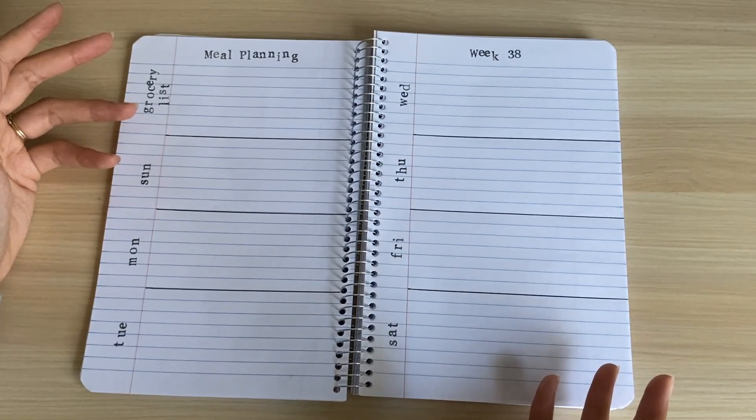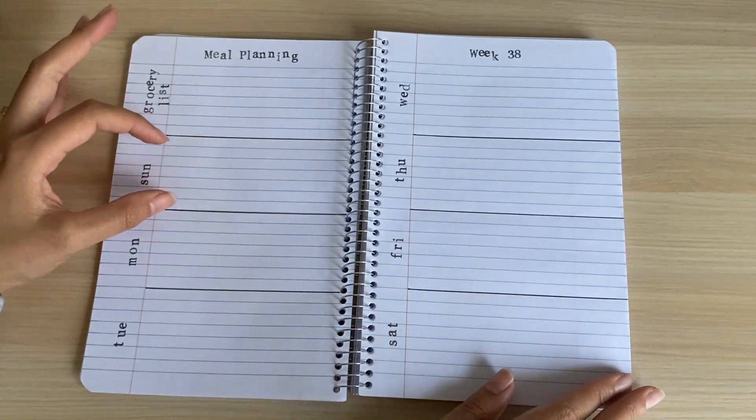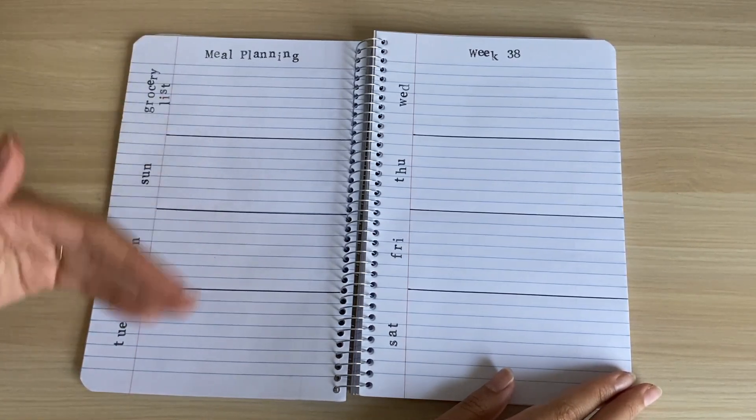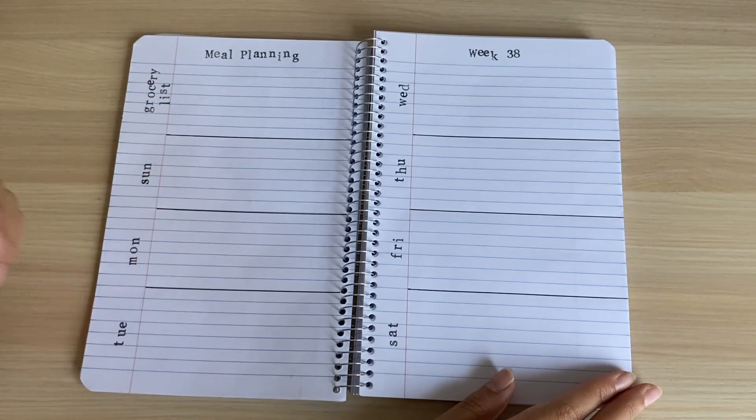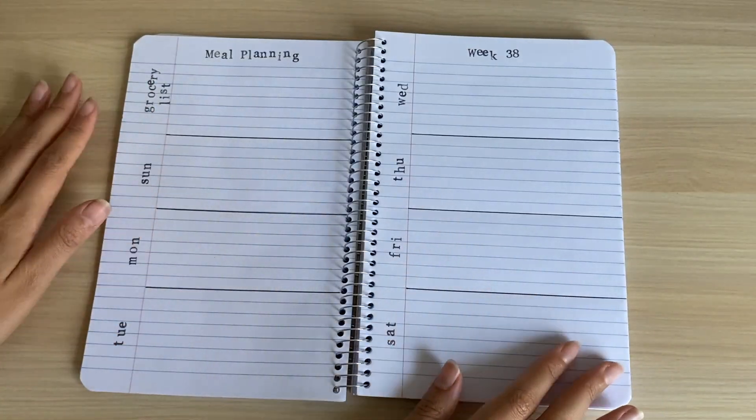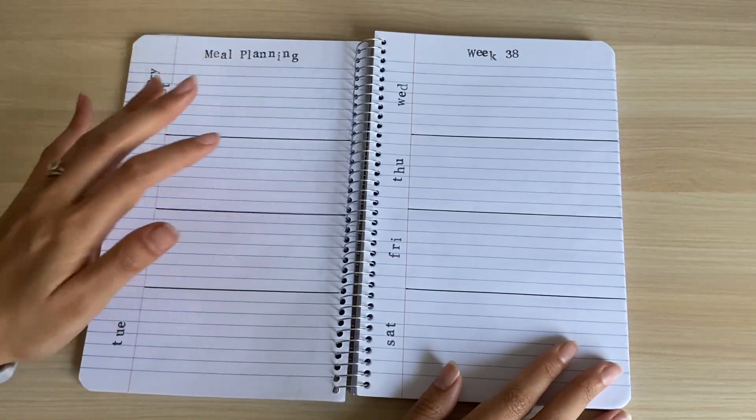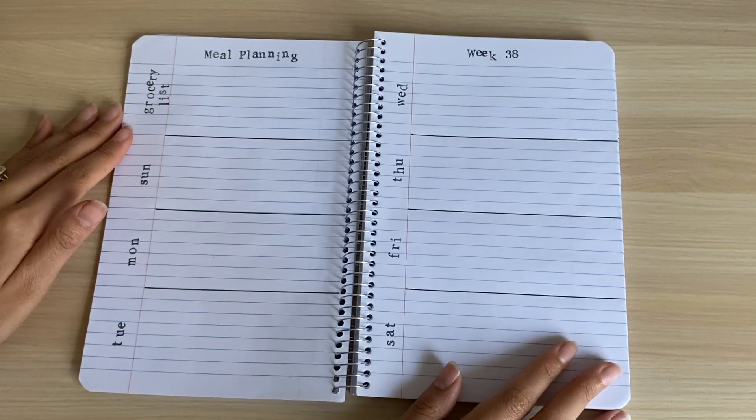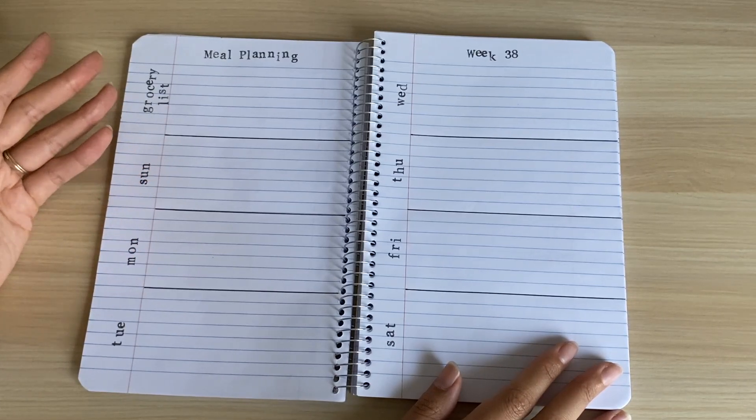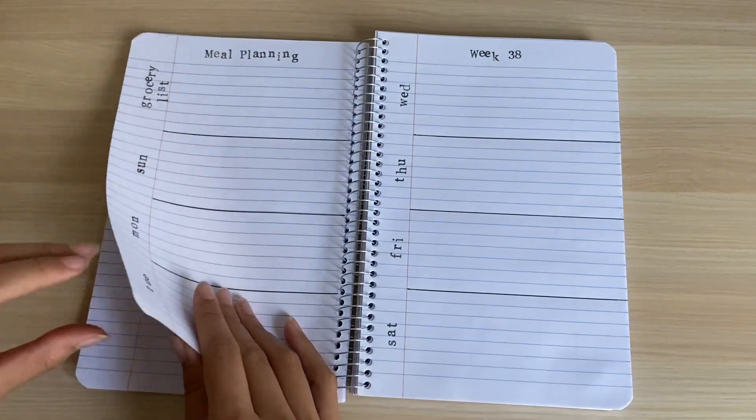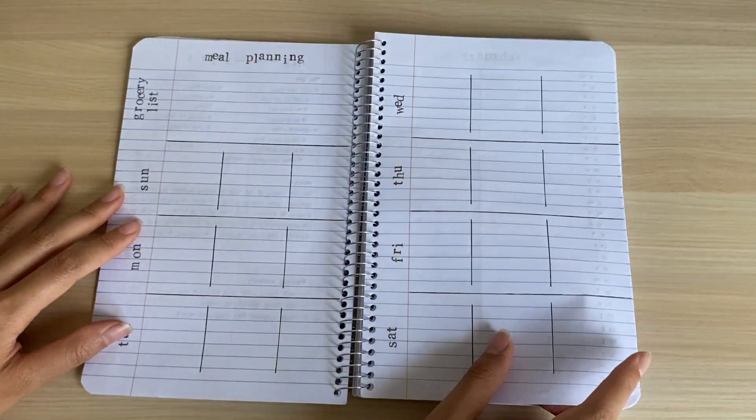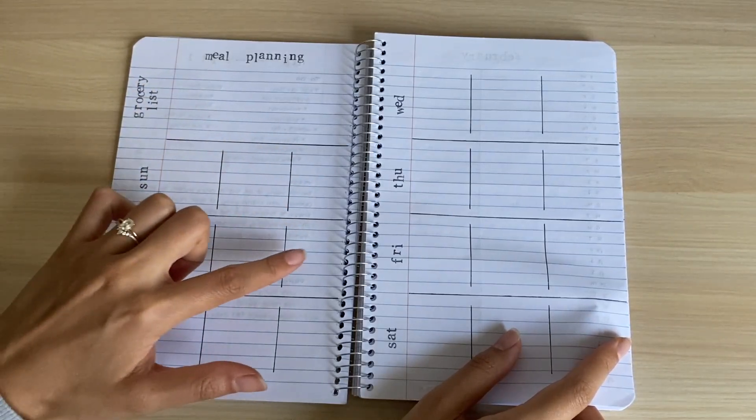This is what the spread looks like. You've got a lot of space for each day of the week. Obviously, if you feel like this is not enough space, you can divide your pages into thirds or halves, and then you just use more paper for each week. You could further divide each section into thirds if you want to jot down breakfast, lunch, and dinner, but it may make your spread look a bit busy and cramped. I can show you what I drafted out myself.